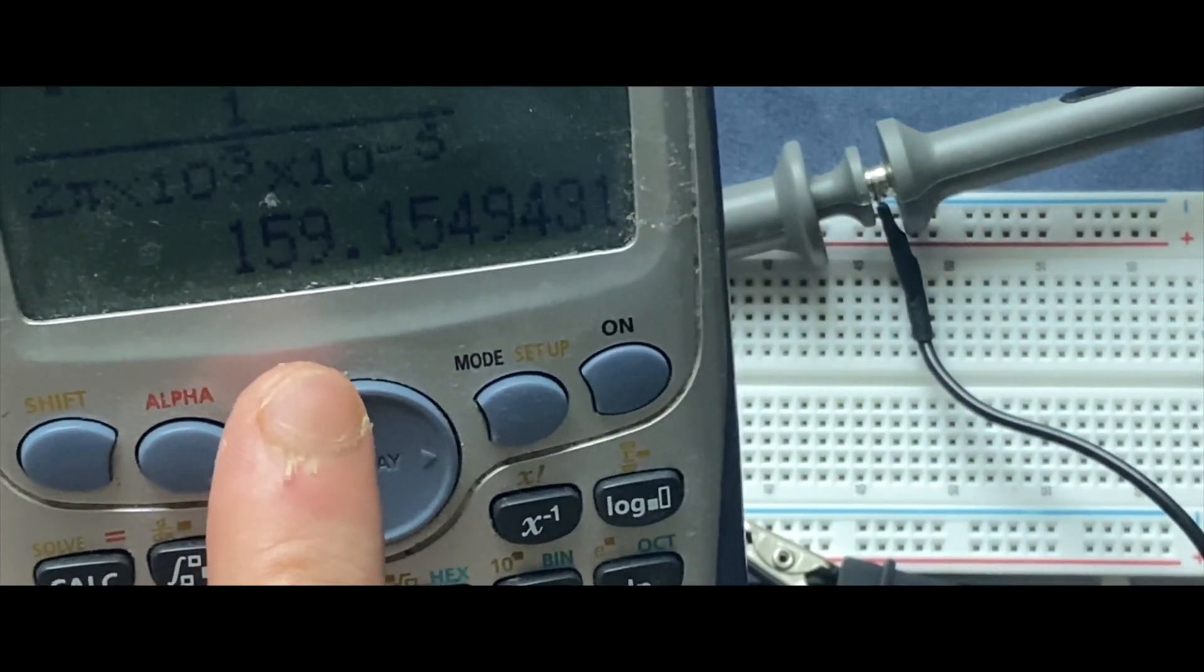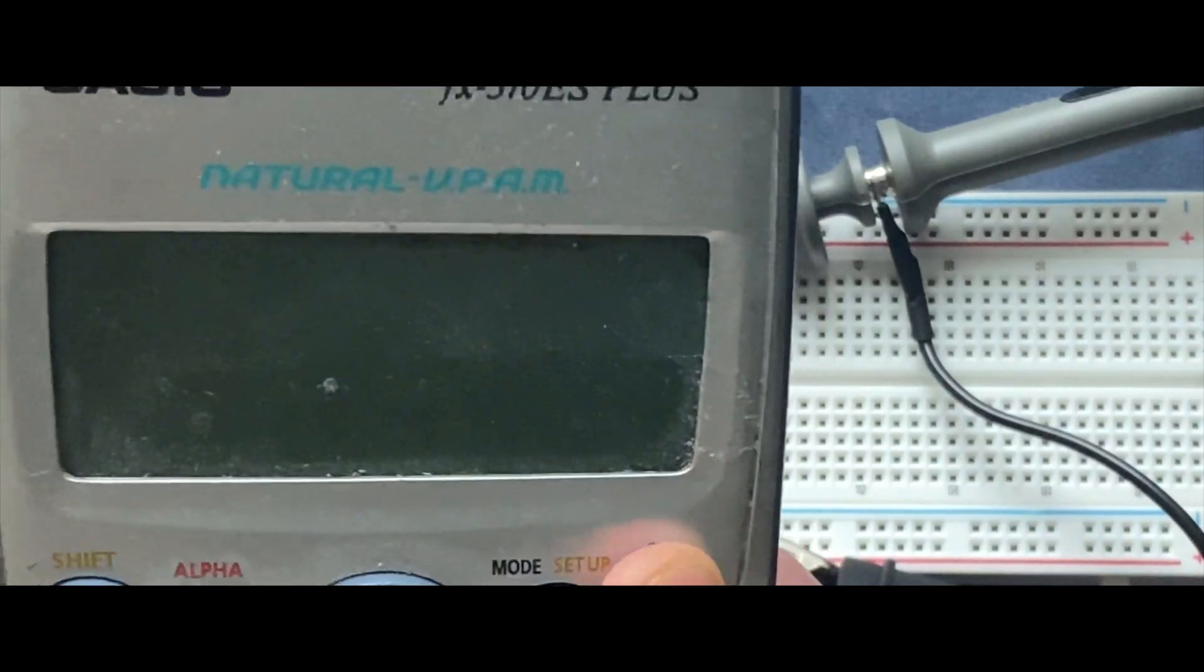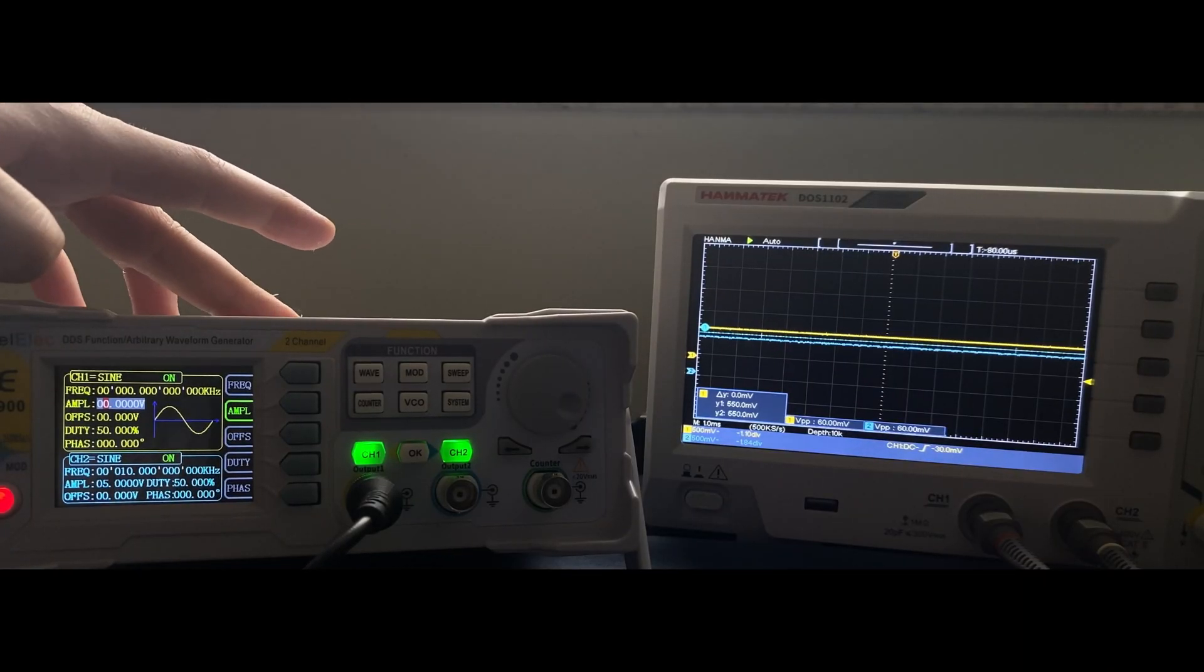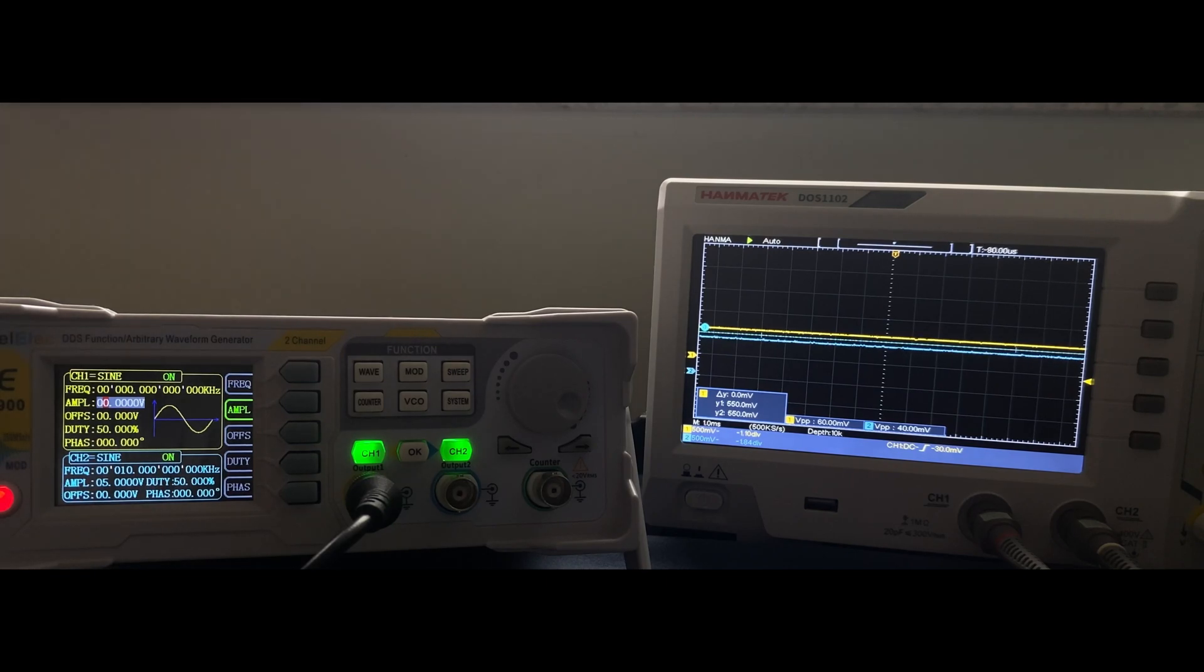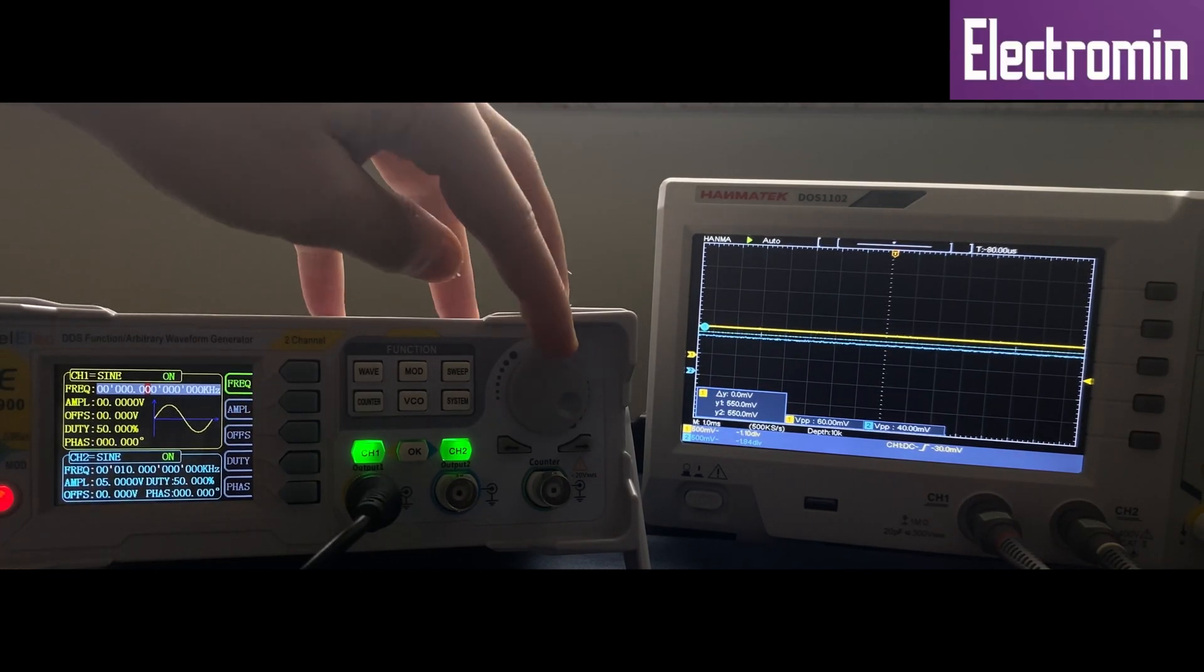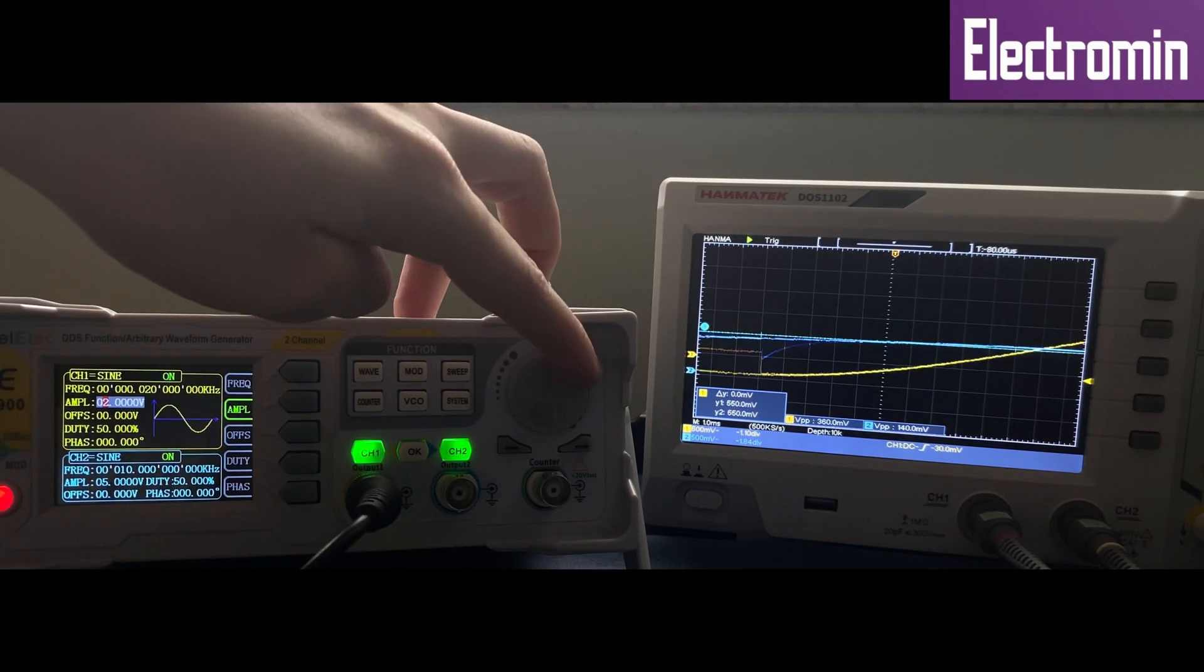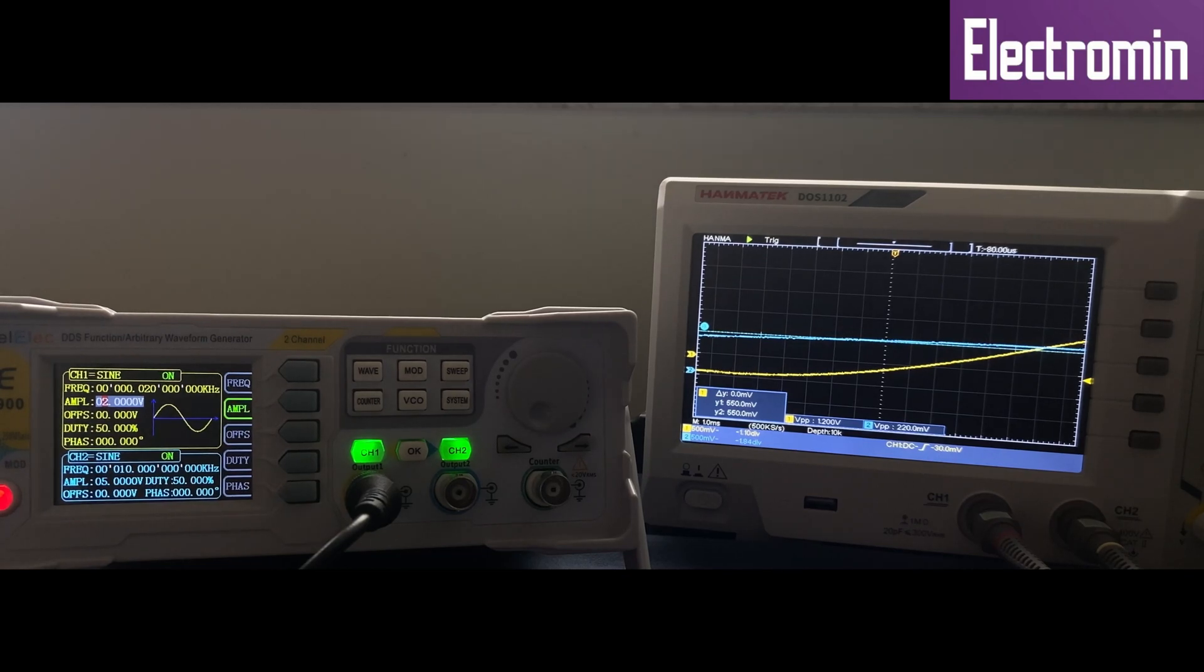On the function generator I have to adjust the frequency and amplitude to get the proper signal on the oscilloscope. I'm going to start with, let's say, 20 hertz and a voltage peak to peak of two volts.